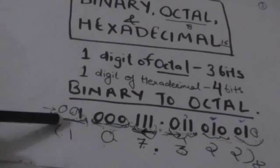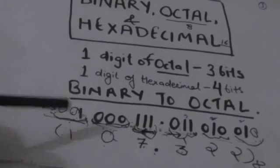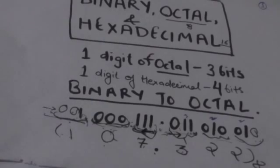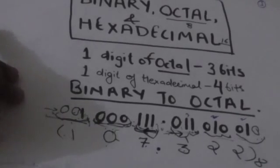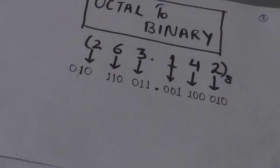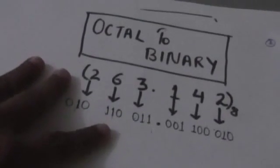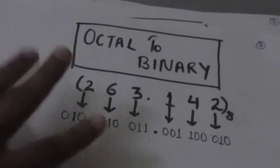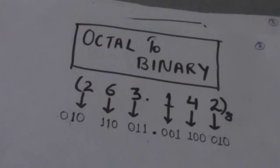This new number — 107 radix point 322 — is an octal number which is equivalent to the original binary number. Next is octal to binary conversion.